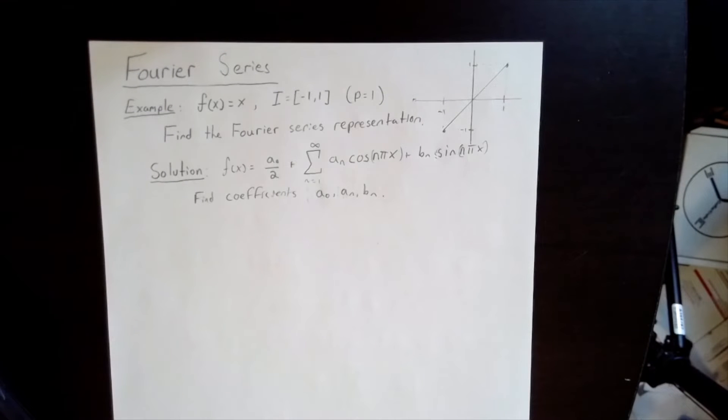In this example, we're going to calculate the Fourier series of the linear function f of x equals x on the interval from negative 1 to 1. In order to calculate this Fourier series, we have to calculate the coefficient a_0, which corresponds to the constant function, as well as the a_n, the coefficients of the cosines, and the b_n, the coefficients of the sine terms.